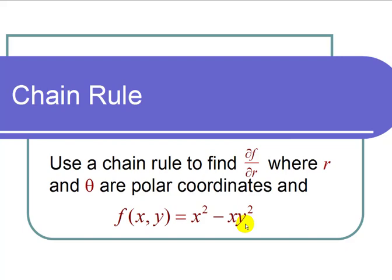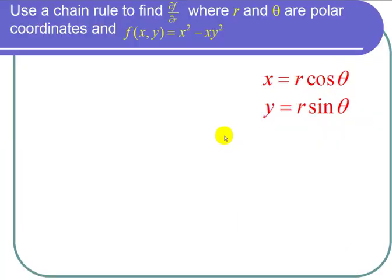Let's first write down the equations that correspond to polar coordinates. They are x = r cos θ and y = r sin θ.